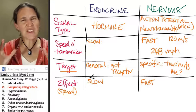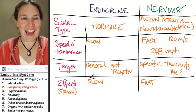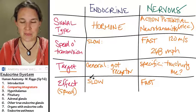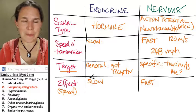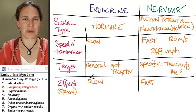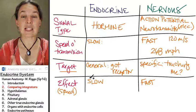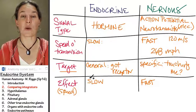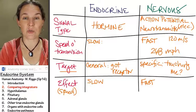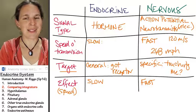That's a general comparison between the two systems. We're actually going to spend an entire clip talking about a nervous system structure we've already dealt with — the hypothalamus in the brain — because it is such an important part of endocrine function. Hypothalamus coming up.